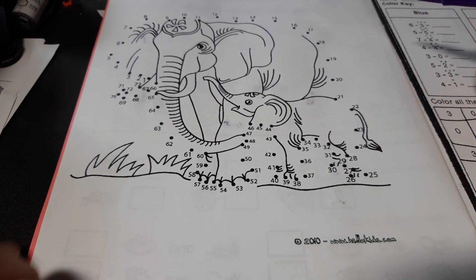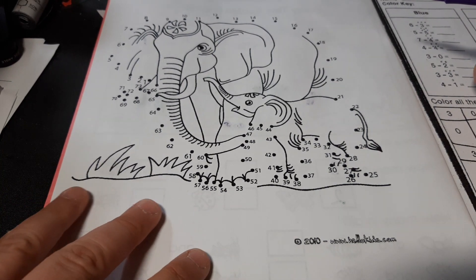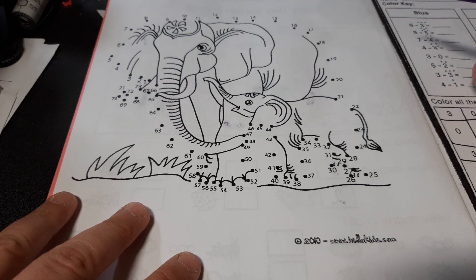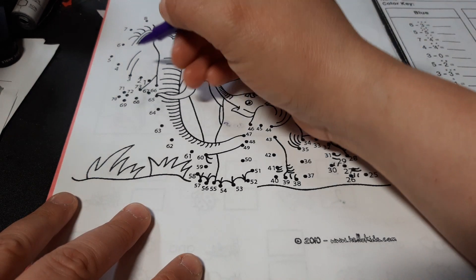Alright, so here we have an elephant that we're making. And this is a dot to dot, so you're going to have to find number one.